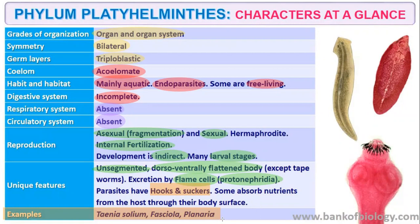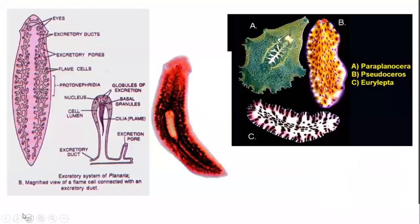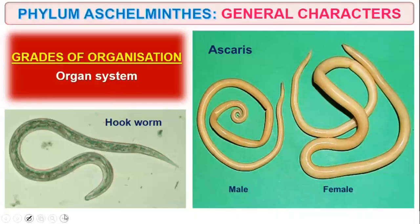That's all about Phylum Platyhelminthus. Next is Phylum Aschelminthus, or the roundworm. The first six properties are similar to the basics of classification which we already covered, so if you are clear about those topics it becomes easier to write down the features of each phylum.